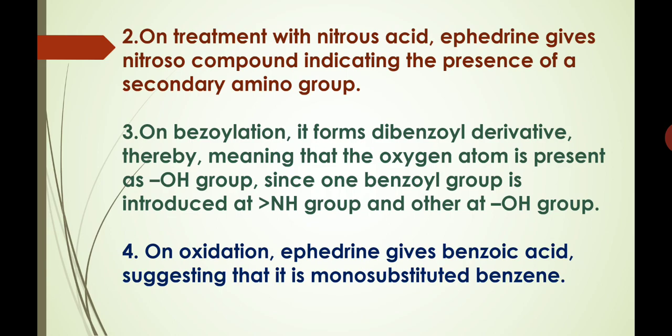On treatment with nitrous acid, ephedrine gives a nitroso compound, indicating the presence of a secondary amino group — that is, the nitrogen atom in ephedrine is in the form of a secondary amino group. On benzoylation, it forms a dibenzoyl derivative, meaning that the oxygen atom is present as a hydroxyl group, since one benzoyl group is introduced at the NH group and the other at the OH group. On oxidation, ephedrine gives benzoic acid, suggesting that it is a monosubstituted benzene.